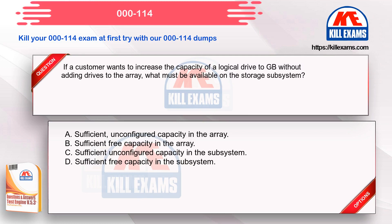Option A: Sufficient unconfigured capacity in the array. Option B: Sufficient free capacity in the array. Option C: Sufficient unconfigured capacity in the subsystem. Option D: Sufficient free capacity in the subsystem.